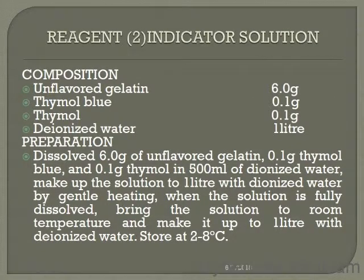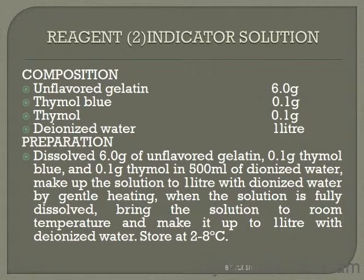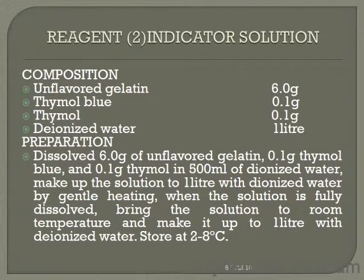Reagent 2, indicator solution: composition is unflavored gelatin 16 grams, thymol 0.1 gram, thymol 0.1 gram, and deionized water to 1 litre. Preparation: dissolve 6 ml of unflavored gelatin, 0.1 gram thymol, and 0.1 gram thymol in 5.5 ml of deionized water. Make up the solution to 1 litre with deionized water by gentle heating. When the solution is fully dissolved, bring to room temperature, make up to 1 litre with deionized water, and store at 25 degrees Celsius.